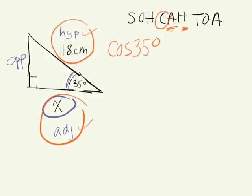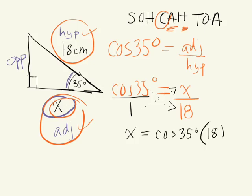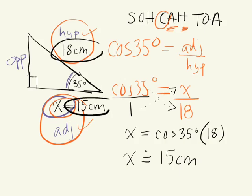Cos 35 degrees is equal to adjacent over hypotenuse. So cos 35 degrees equals X over 18, where X is the unknown adjacent side and 18 is the hypotenuse. One way to do this is to cross multiply. Putting the cosine over 1 doesn't change the value, so we cross multiply: 1 times X equals cos 35 degrees times 18. Calculating that on your calculator gives approximately 15 centimeters. So this side length is approximately 15 centimeters — and looking at the dimensions given, that's reasonable.